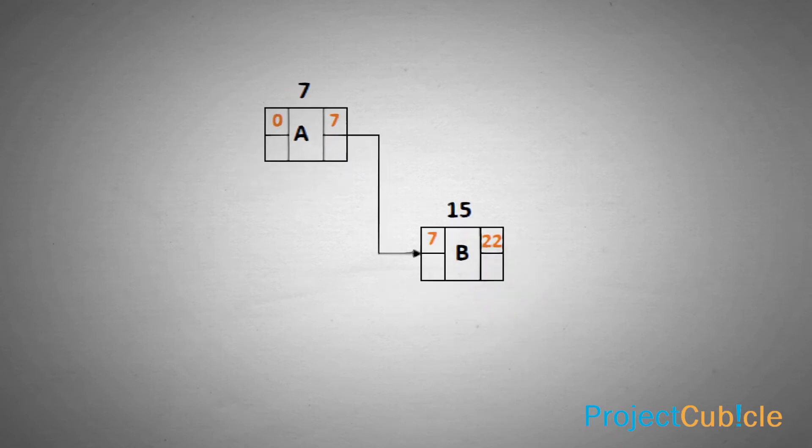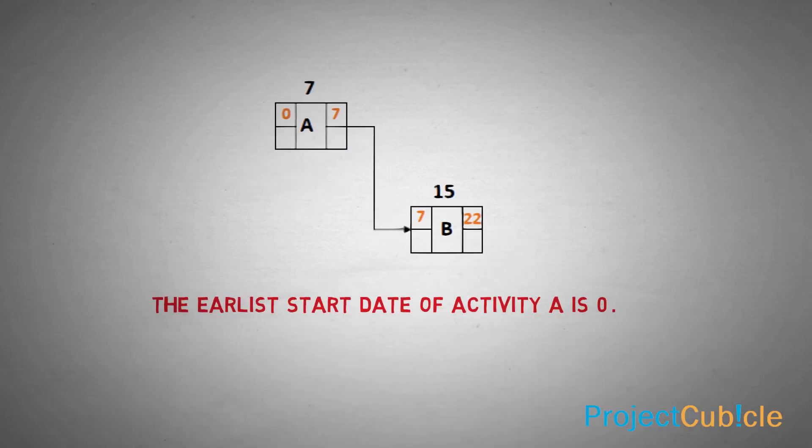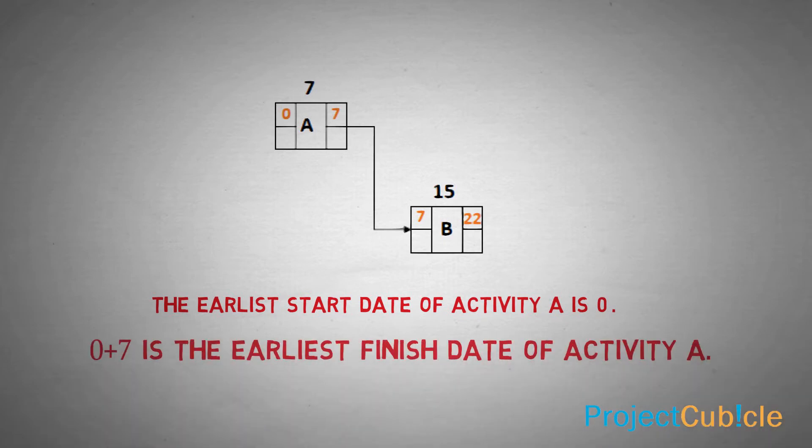the project begins at date 0. So the earliest start date of activity A is 0. 0 plus 7 is the earliest finish date of activity A.